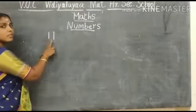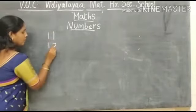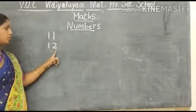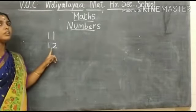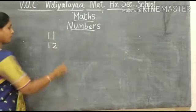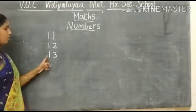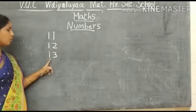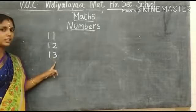What number is this? Number 11. Next number is 1, 2, number 12. What number is this? Number 12. What number is this? Number 12. 1, 3, number 13. What number is this? Number 13. This is number 13.